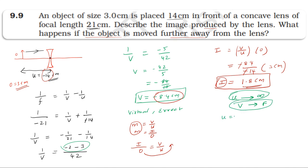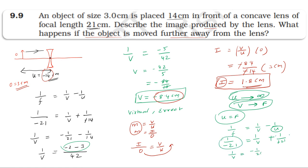When the object is at the focus, using 1/f = 1/v minus 1/u, with f equal to minus 21 cm and u equal to minus 21 cm. Solving: 1/v = 1/f + 1/u = minus 1/21 minus 1/21 = minus 2/21, giving v equal to minus 10.5 cm.